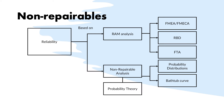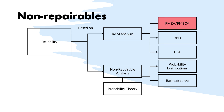Non-repairable analysis is essentially a set of methodologies and concepts that allows us to assess the reliability of an unrepairable system — a system that only has one lifetime and one time to failure. It is supported by probability theory, and examples of methodologies include probability distributions such as the normal, log normal, and so on. It also covers concepts such as the bathtub curve. It is different from methodologies we have studied so far, such as the FMEA or the reliability block diagram.